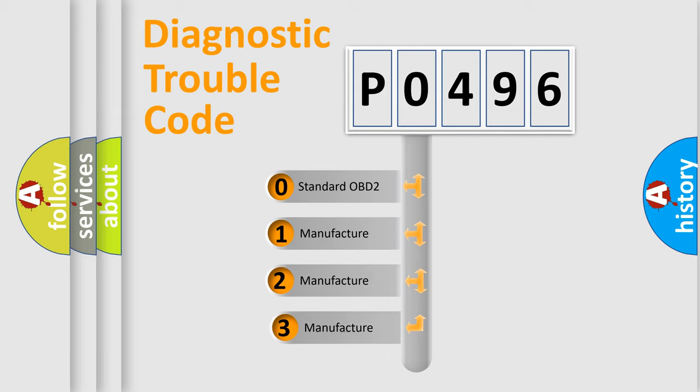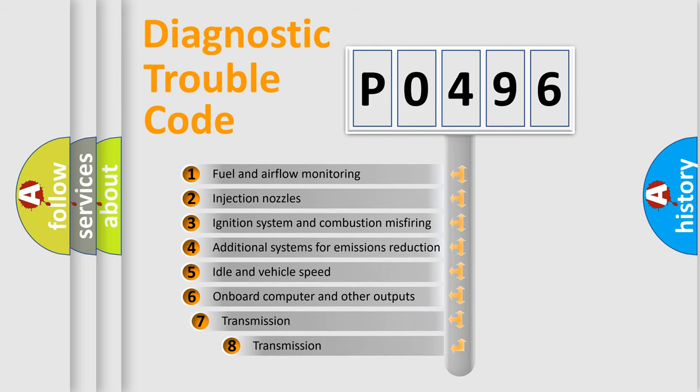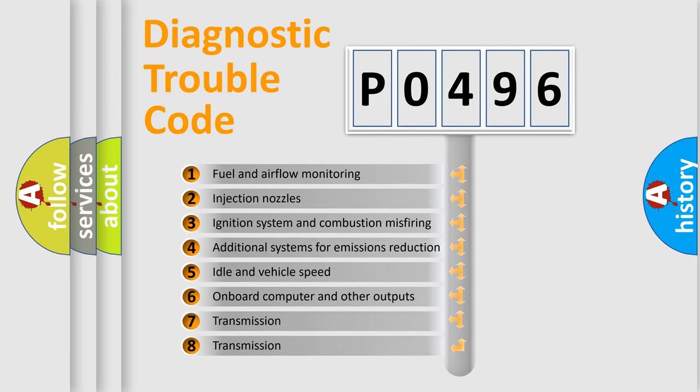If the second character is expressed as zero, it is a standardized error. In the case of numbers 1, 2, or 3, it is a more prestigious expression of the car-specific error. The third character specifies a subset of errors.